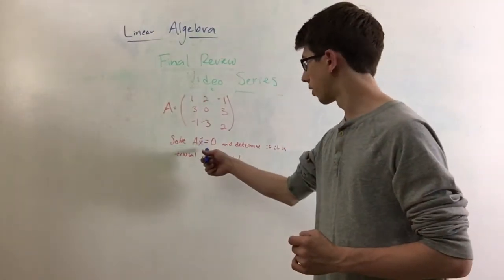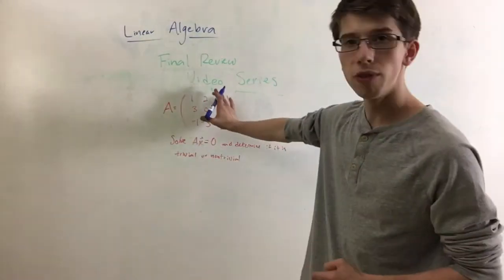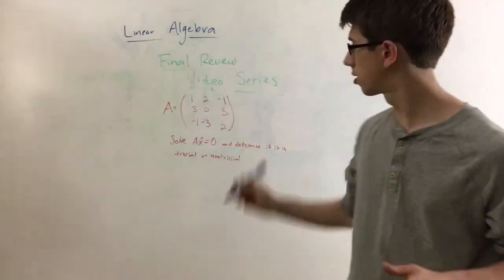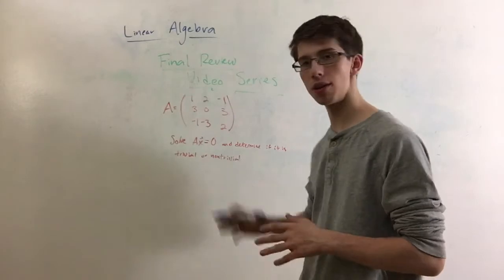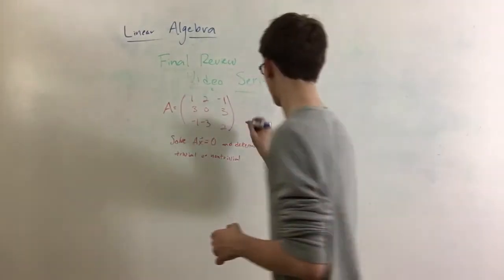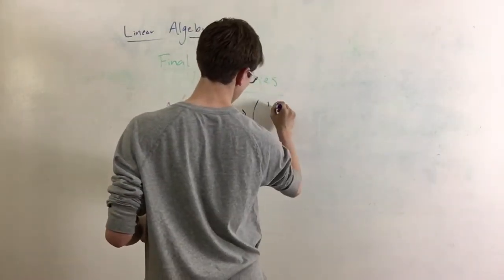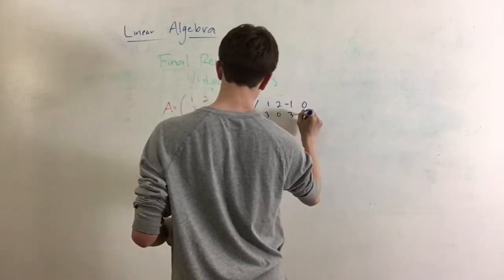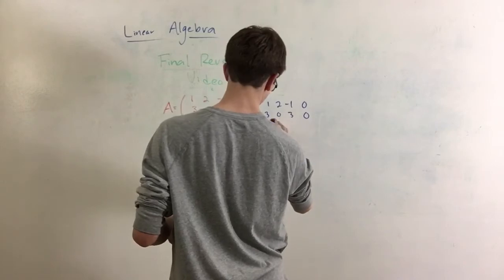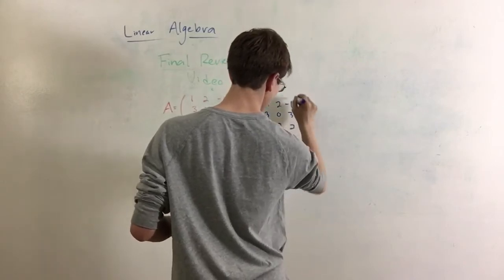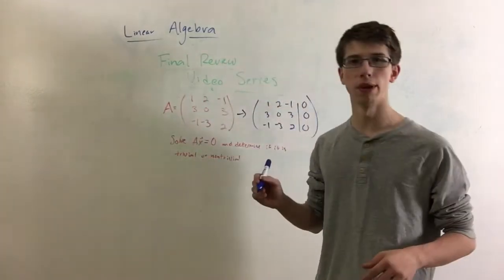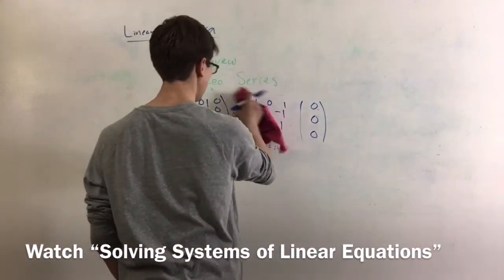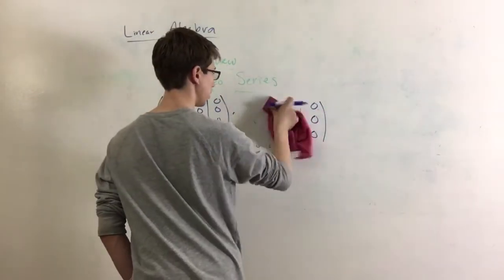What we're going to do is create an augmented matrix. This is our coefficient matrix, if we refer to this as a linear system, and then we're going to augment it with the zero vector. When we augment it, this becomes 1, 2, negative 1, 0, 3, 0, 3, 0, and negative 1, negative 3, 2, 0. We'll put a little bar in the middle to separate that augmentation. So now we're left with the identity matrix on the left and all zeros on the right.